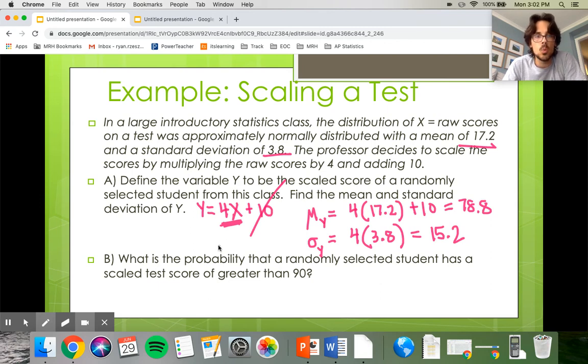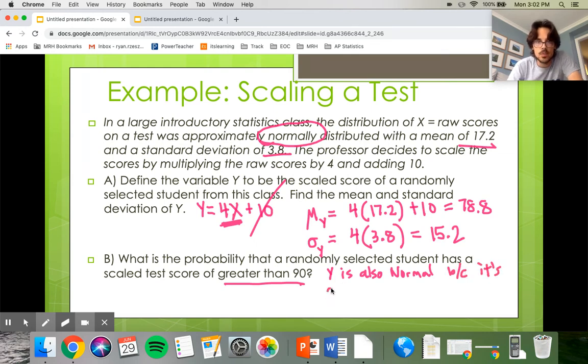All right, last question for this video. It says, what is the probability that a randomly selected student has a scaled test score of greater than 90? And at first, it doesn't feel like they gave us enough information to do this problem. There's no table we can look at. There's nothing else going on. But they slipped in this problem that the distribution of scores, raw scores, is normal or approximately normal. So if the raw scores are approximately normal, we learned back in chapter one, when you add, subtract, multiply, or divide by a constant, that does not affect the shape of your graph. So your new graph for Y is also going to be normal, even though they didn't tell us that. So Y is also normal because it's a linear transformation of X.